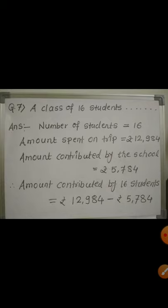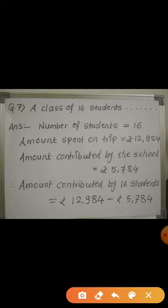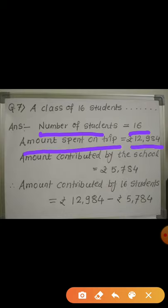So first of all we write all the things which are given in the question. What are we given? First, there are 16 students in the class. So we write: number of students = 16. After that, the school spent Rs. 12,984 on the trip, so: amount spent on the trip = Rs. 12,984. We are also given that school contribution = Rs. 5,784. And what we are asked? We have to find out the contribution of each student.